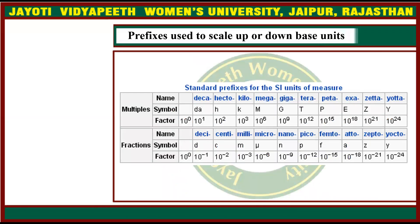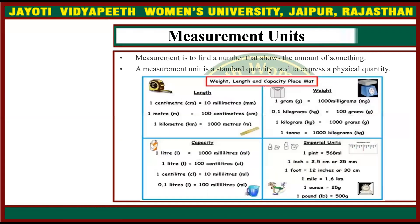This table shows multiples and fractions of standard prefixes for SI units of measure. Measurement is to find a number that shows the amount of something. A measurement unit is a standard quantity used to express a physical quantity. For example, for length: 1 centimeter equals 10 millimeters, 1 meter equals 100 centimeters, and 1 kilometer equals 1000 meters.